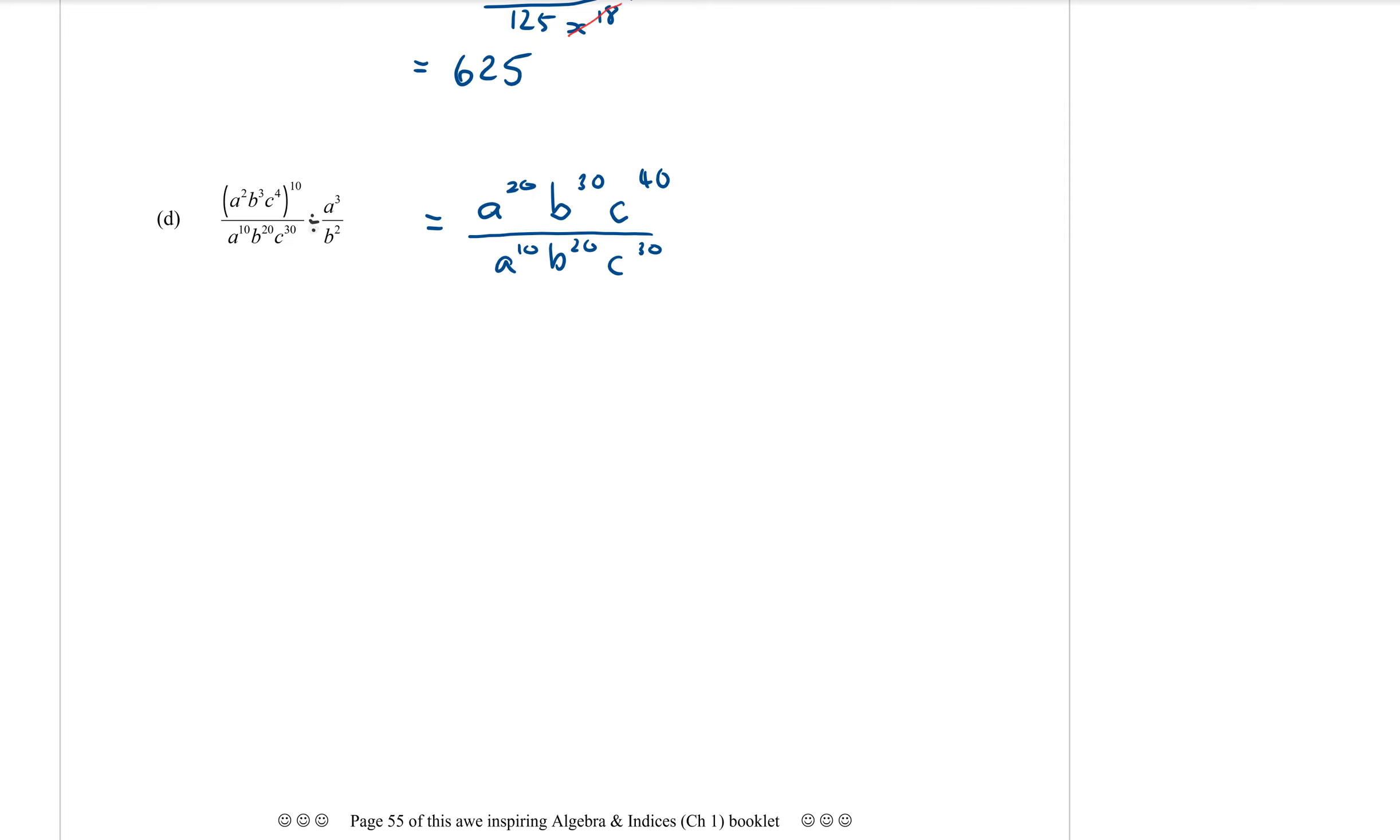Now, because there's no brackets for that second part there, let's do our leave kiss flip. All right. Remember when you have a divide, you leave the first fraction. You turn your divide into a times. That's the kiss. And you flip the fraction upside down to be B squared on the top and A cubed on the bottom. Now, again, you can do cancelling out here, but we're going to stick with our process of doing that once at the end. So I'm going to multiply the tops together.